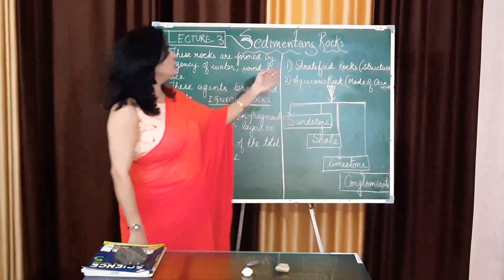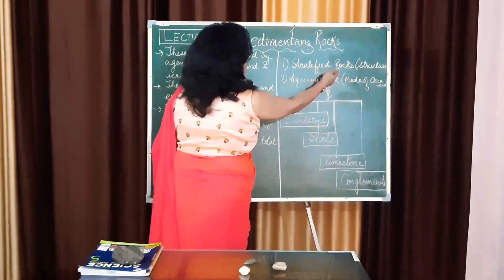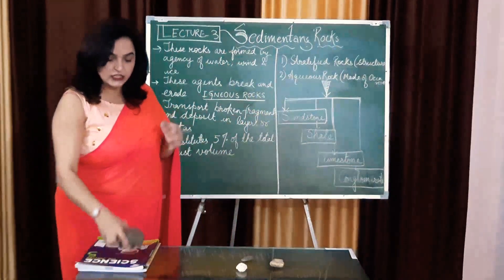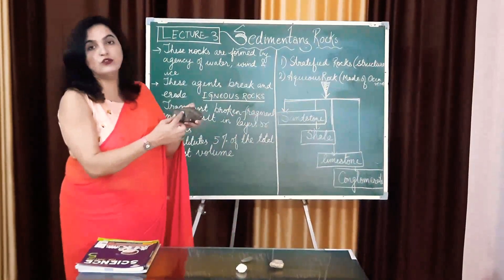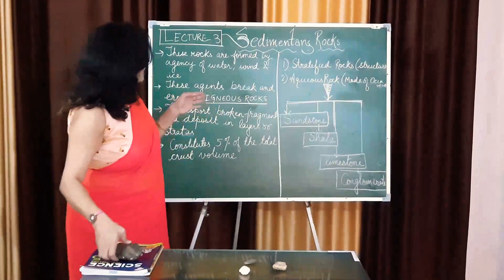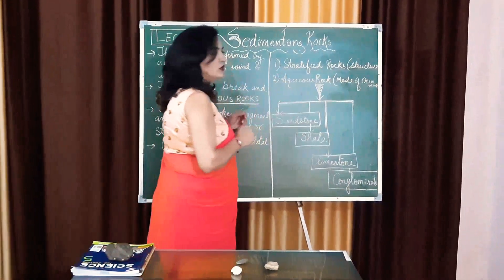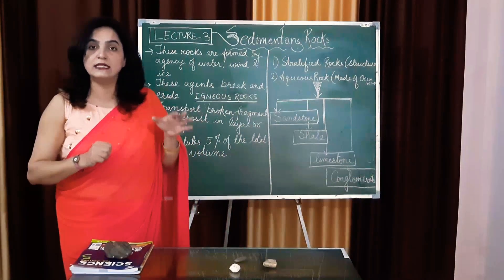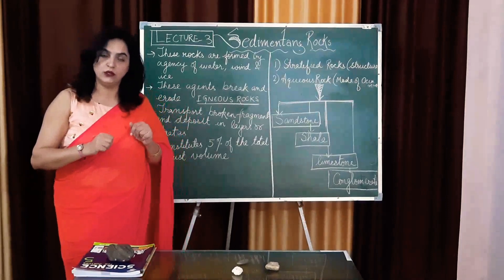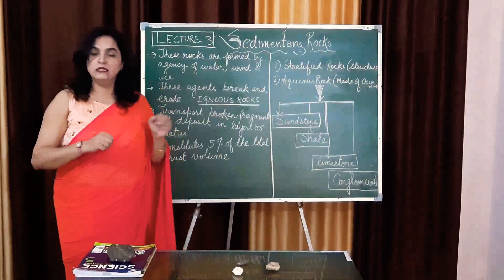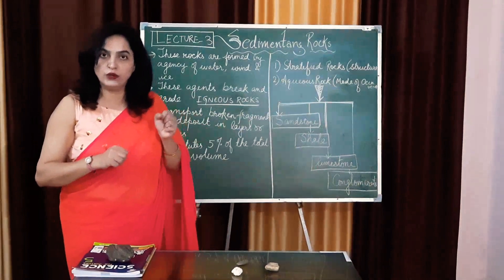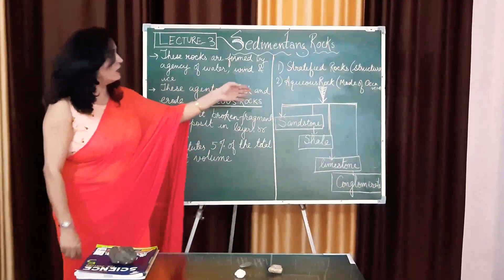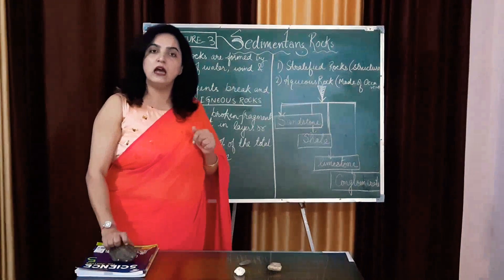Other names you can give them: on the basis of structure, they are called stratified rocks. Why stratified? Because there are various strata — strata means layers. So we call them stratified rocks. Secondly, we can also call them aqueous rocks. Aqueous means water, and we find them mostly near the surface of water where sediments are eroded by water. So normally they are formed near the water surface, and we call them aqueous rocks on the basis of their occurrence.